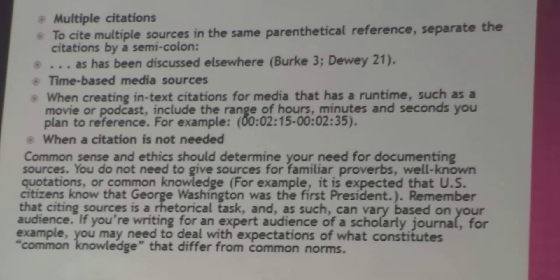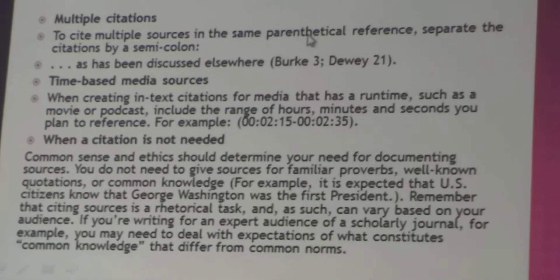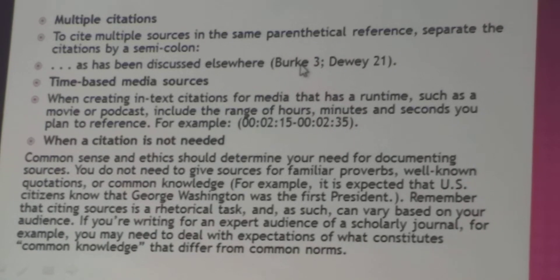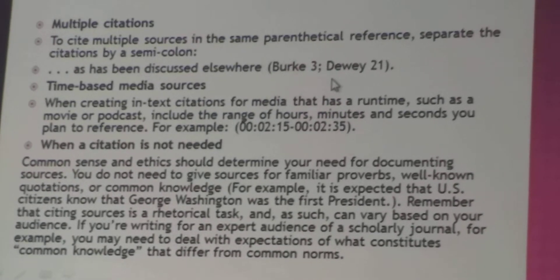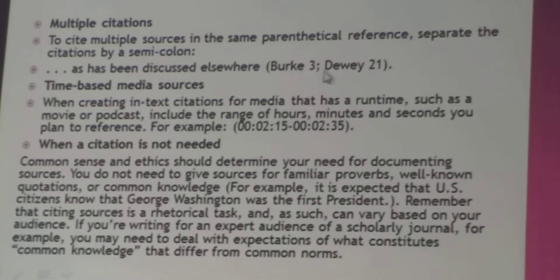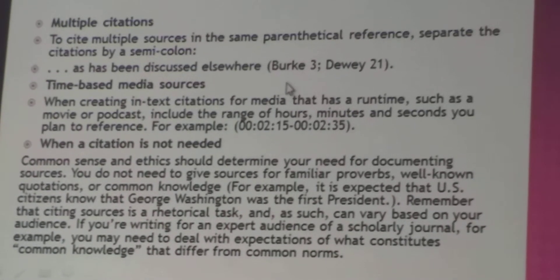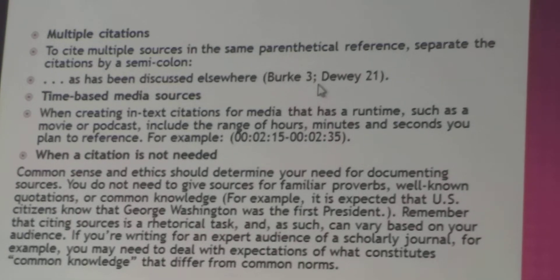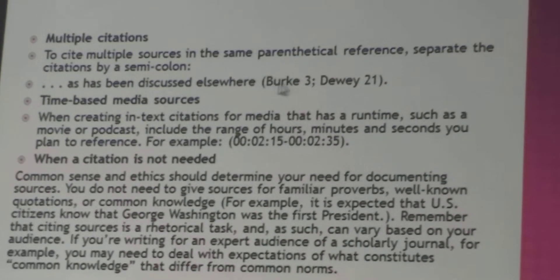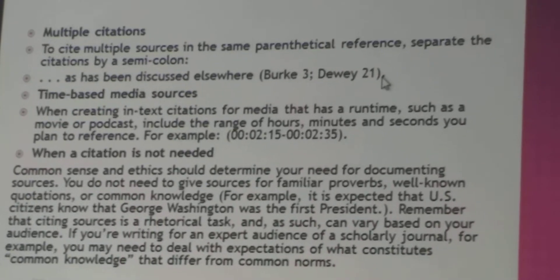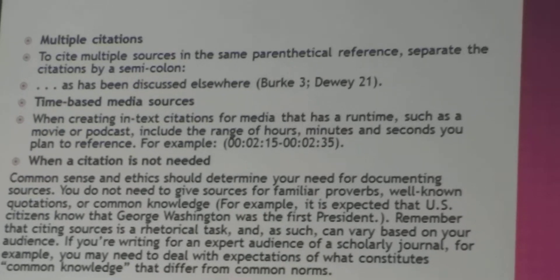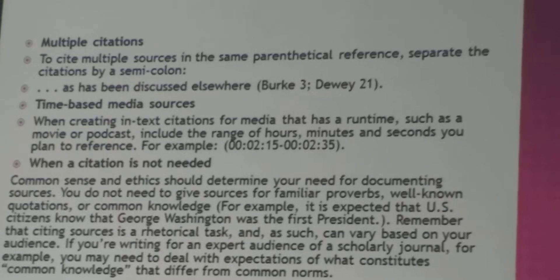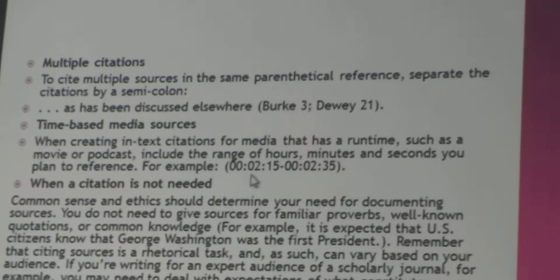When paraphrasing and multiple authors share the same idea, you can cite both. For example, if you took from one book on page 23 and from another source on page 21, you cite both, separating them with a semicolon and listing them in alphabetical order. For time-based media sources — such as social media — you should list the exact time in hours, minutes, or seconds.